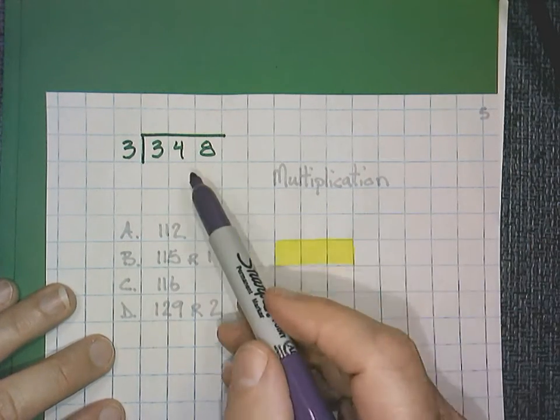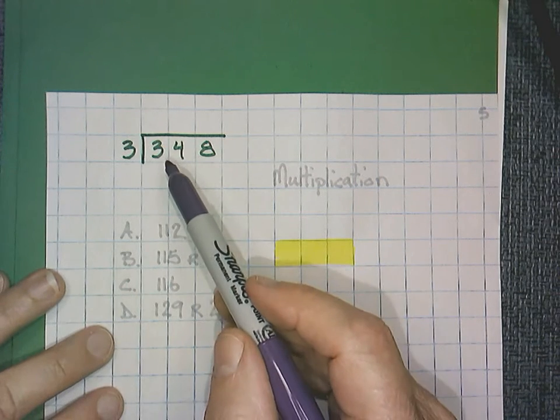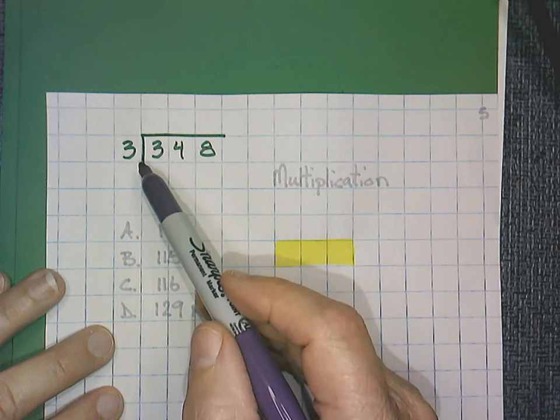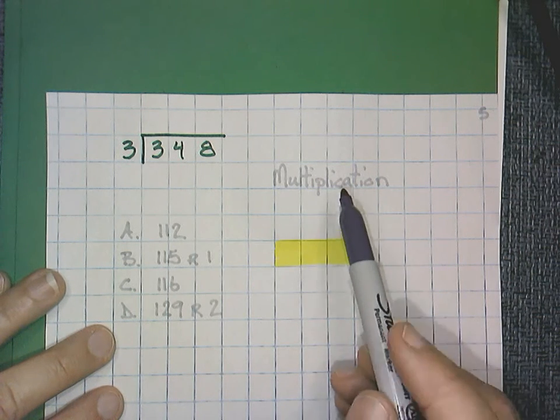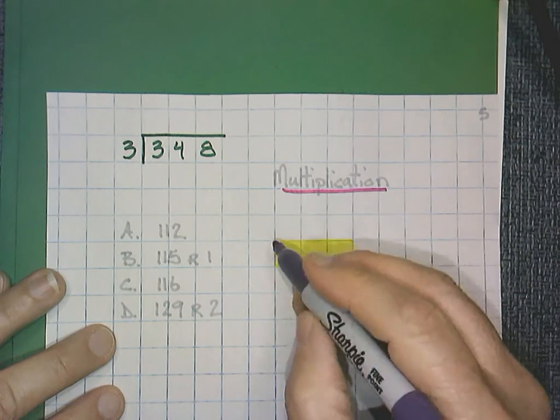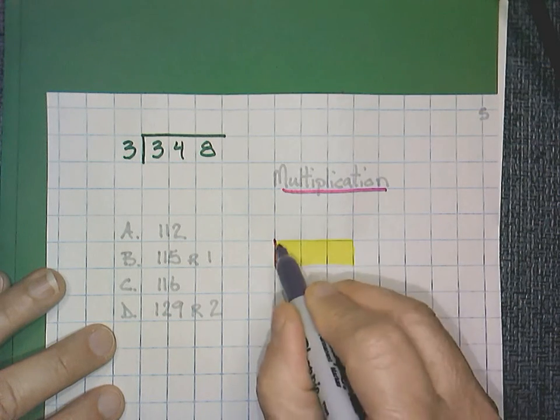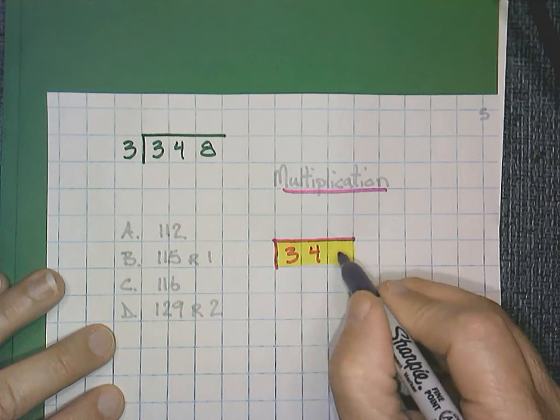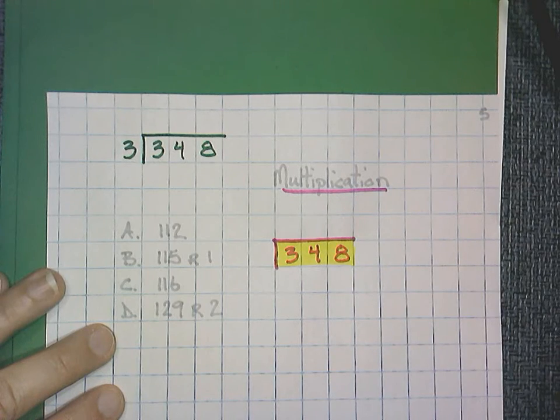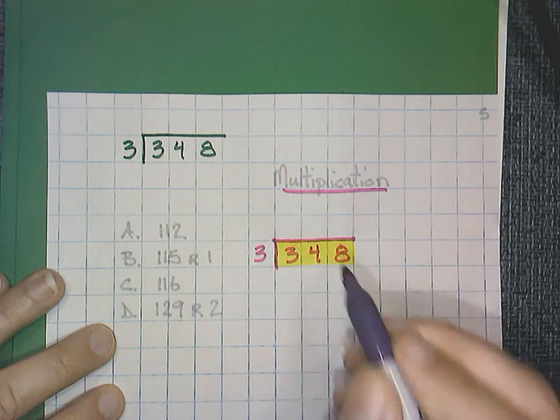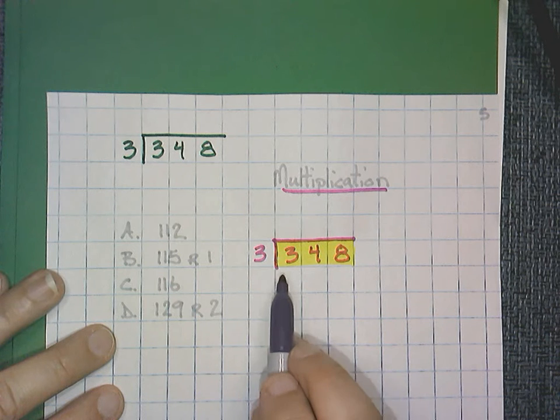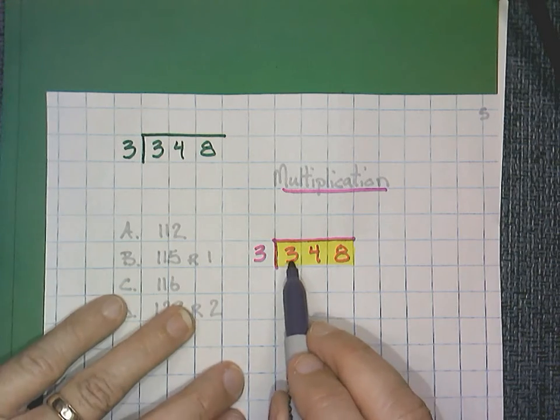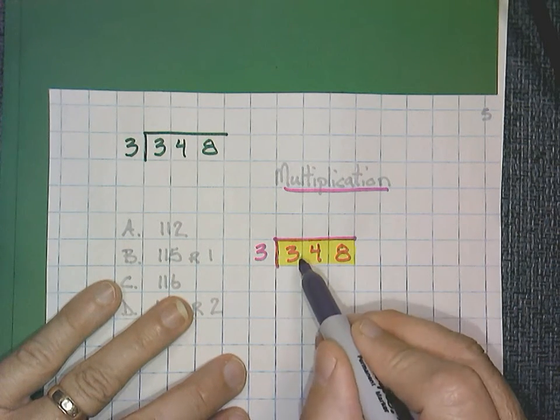This is from a SOL test. You can see this is pretty easy, the way it's written. 348 divided by 3. Let's use our multiplication equation strategy to solve this one. I'm going to rewrite our problem. 348 divided by 3. We are going to work across from left to right, digit by digit. I do see that the 3 does go into 1, but we said we're going to use multiplication. So I'm going to start with the 3.